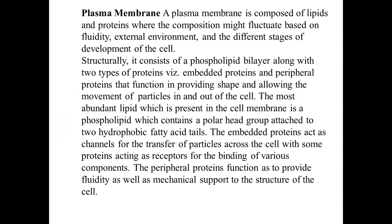The plasma membrane is composed of lipids and proteins where the composition might fluctuate based on fluidity, external environment and the different stages of development of the cell. Structurally, it consists of a phospholipid bilayer along with two types of protein: embedded protein and peripheral protein, that function in providing shape and allowing the movement of particles in and out of the cell. The most abundant lipid in the cell membrane is phospholipid, which contains a polar head group attached to two hydrophobic fatty acid tails. The embedded proteins act as a channel for the transfer of particles across the cell, with some proteins acting as receptors for the binding of various components. The peripheral protein functions to provide fluidity as well as mechanical support to the structure of the cell.